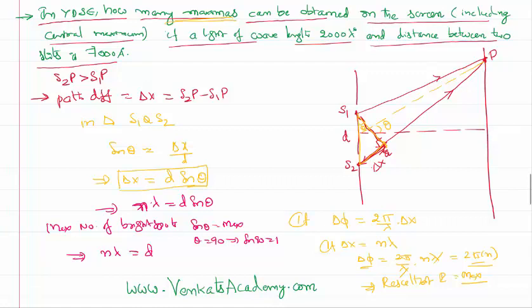So n lambda - lambda is given to you in the problem as 2000 angstrom and the distance between the slits is given as 7000 angstrom. That implies n is going to be equal to 3.5.